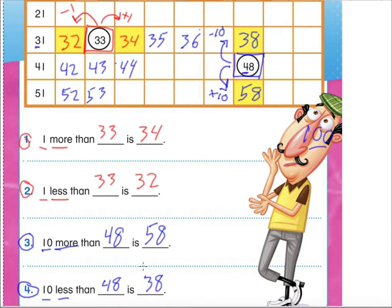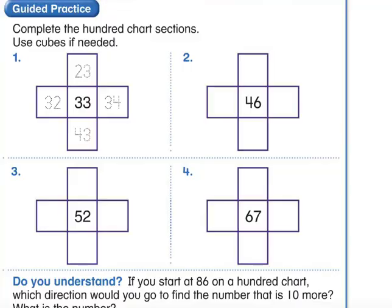Now let's open up our packets and go to the next page. I'll give everyone a couple more seconds to open up to the inside page of your work mats. Alright, everyone should have their work mats open. The directions say: complete the 100 chart sections — these squares are like taking parts out of a 100 chart. Use cubes if needed; just let me know and I'll make sure you have them.